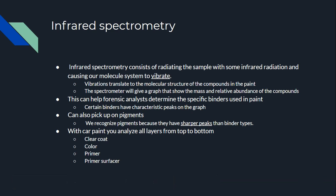Analysts can also pick up on pigments this way because pigments have sharper peaks on an IR graph than a binder type. If you're analyzing car paint, you have to analyze all the layers from the top coat to the bottom: the clear coat first, then the color coat, then the primer, and then the primer surfacer. All of these layers have to be analyzed to get a good idea of what car the paint came from in a case like a hit and run.